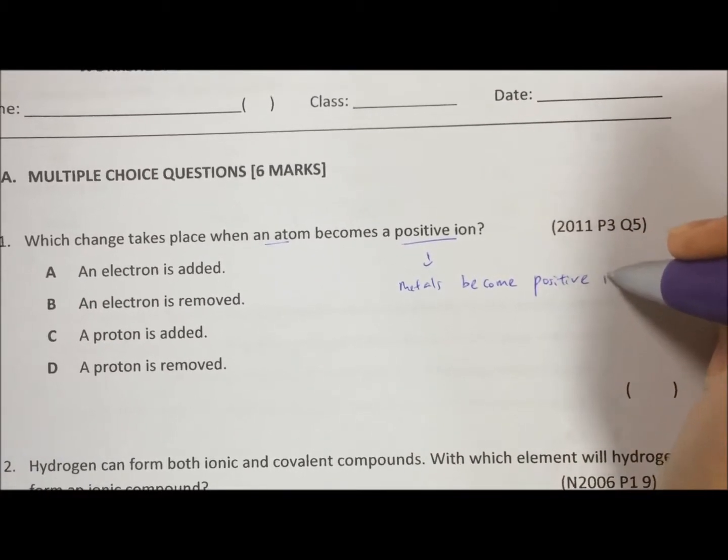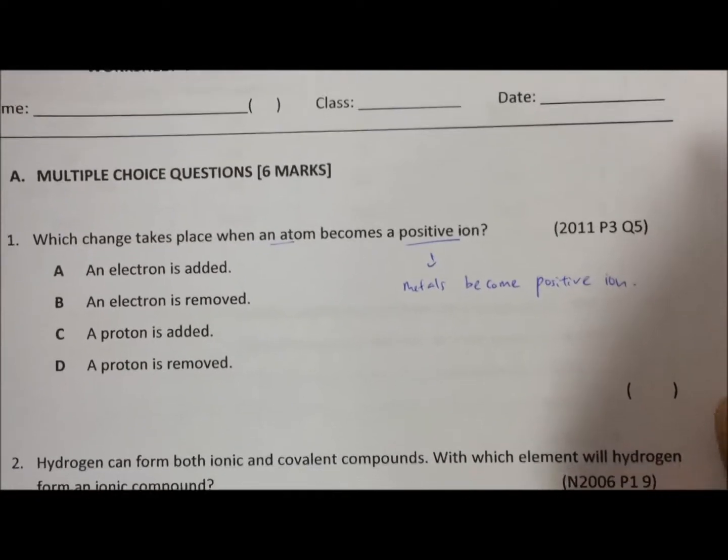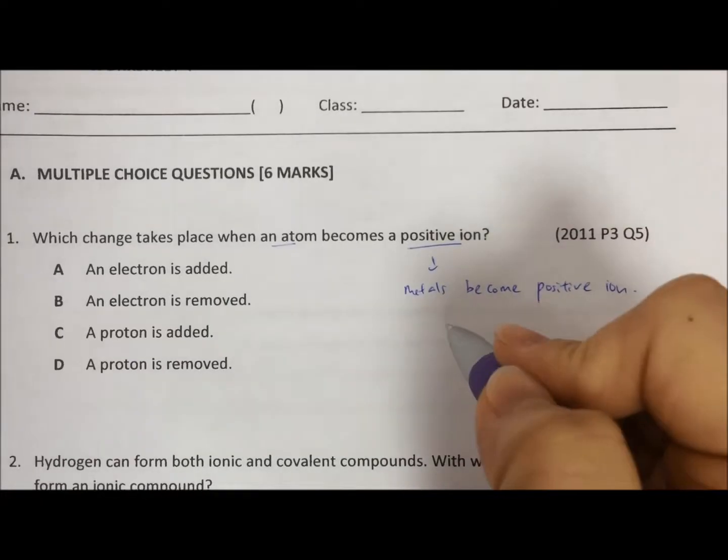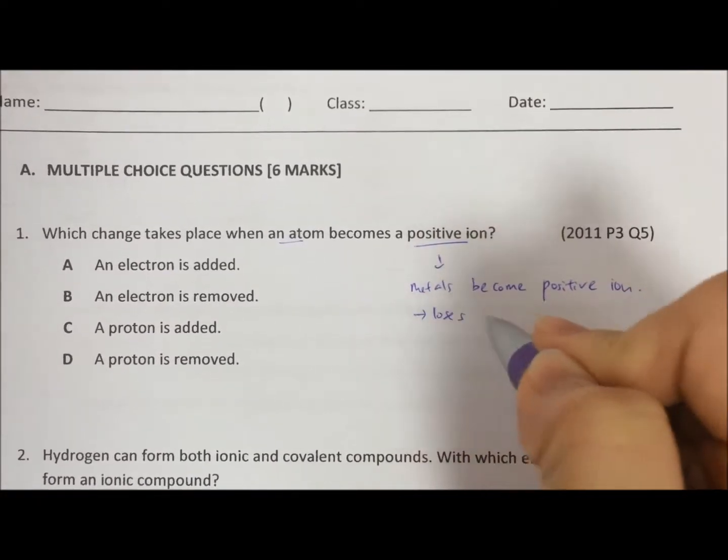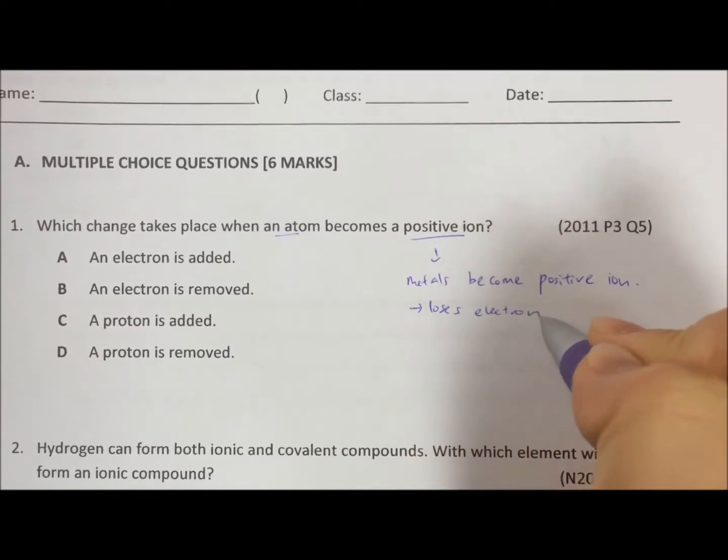Group 1 will form 1+, group 2 will form 2+, group 3 will form 3+. So how do metals become positive ions? They will lose electrons.